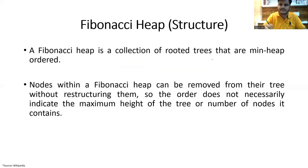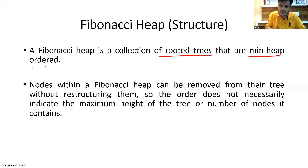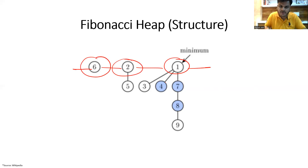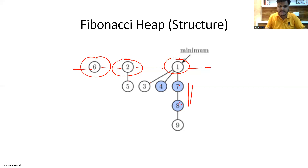A Fibonacci heap is a collection of rooted trees that are min-heap ordered. For example, two is less than five, one is less than three, four, seven, and eight; seven is less than eight, and eight is less than nine. All the above elements must be minimum compared to all the elements which exist below them. That is the basic definition of Fibonacci heap.